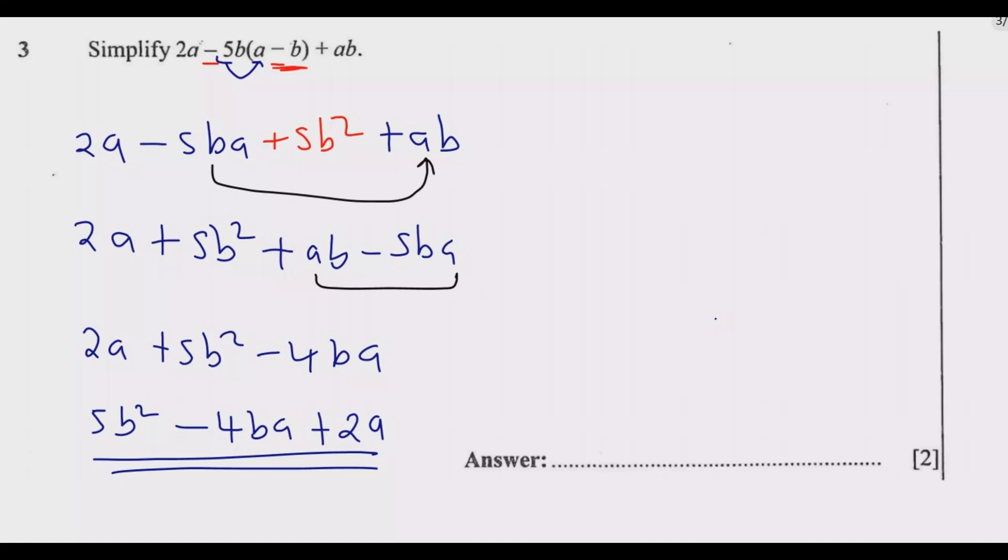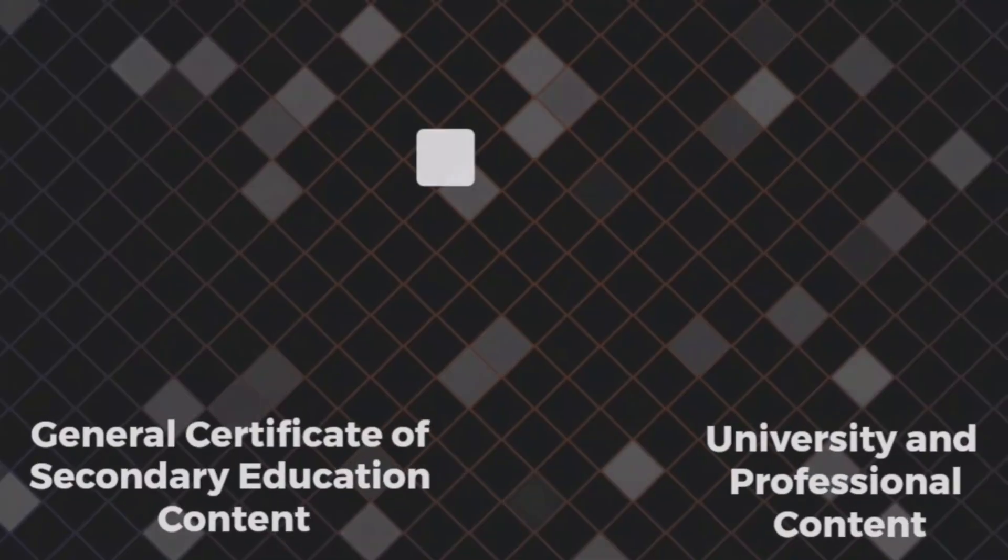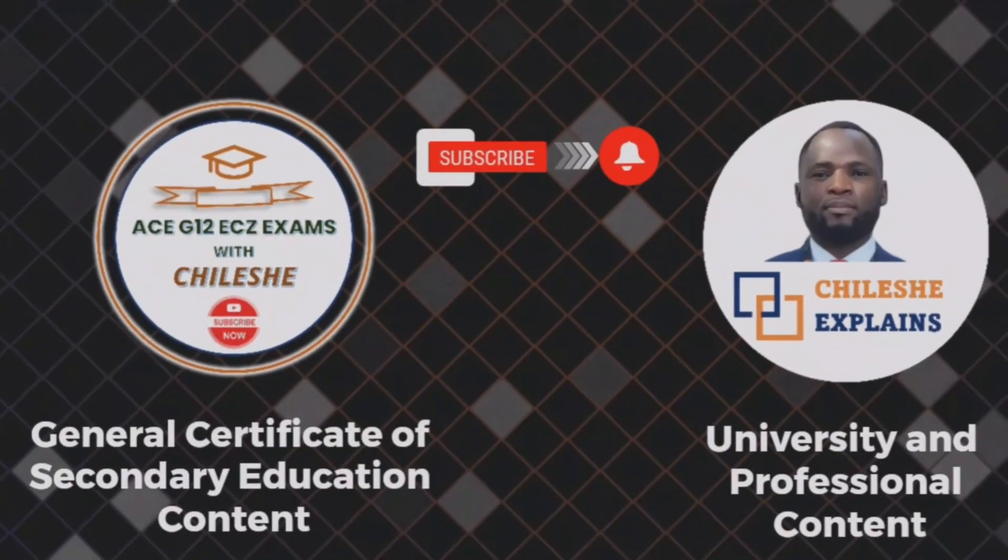You don't need to start factoring because we're coming from factoring. In this case, we cannot add any further. Once you reach this point, you are good to go. Then you get this two marks. This is how you answer this question. Thank you.